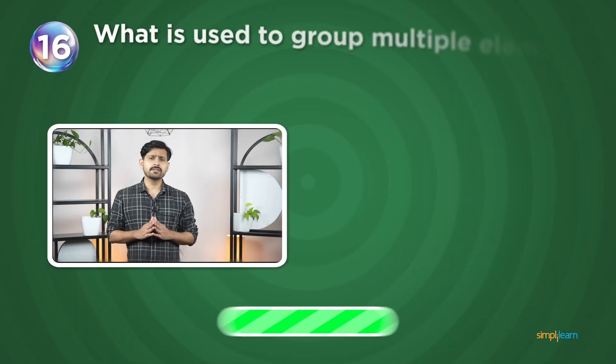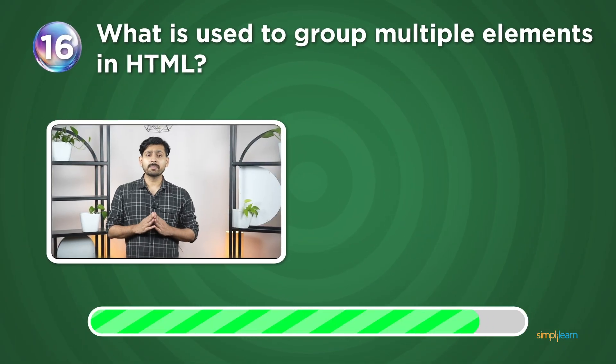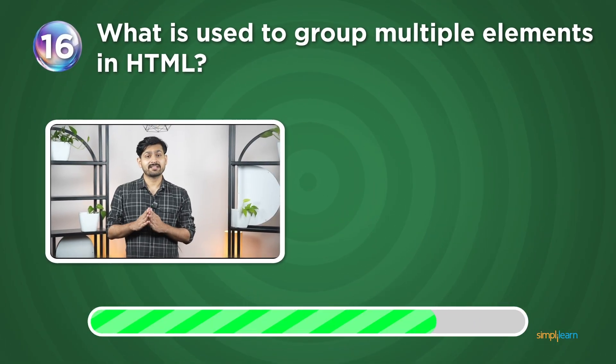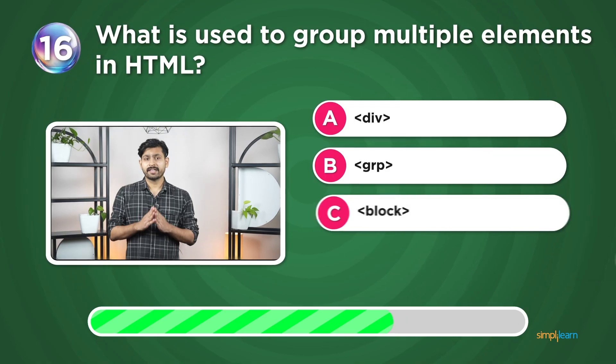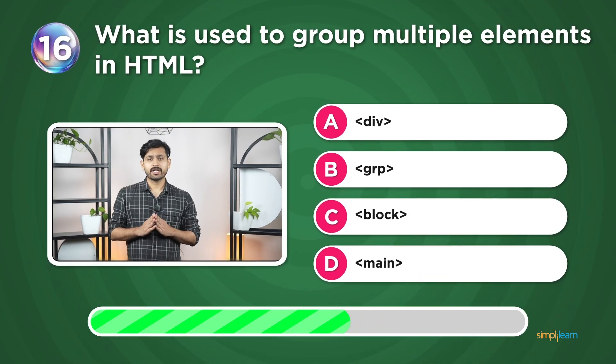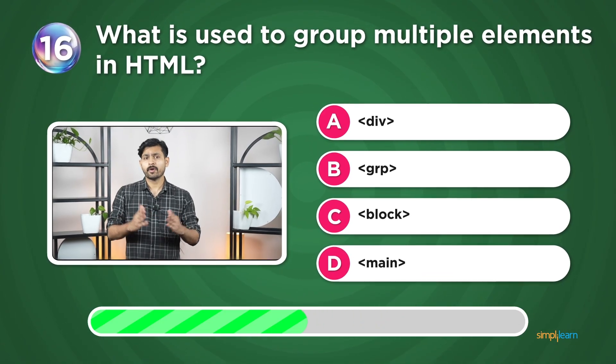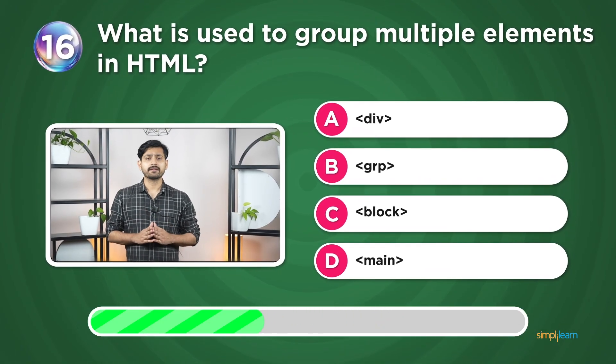Question 16: What is used to group multiple elements in HTML? div, jrp, block, or main?